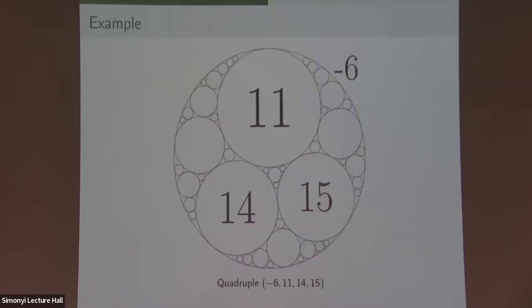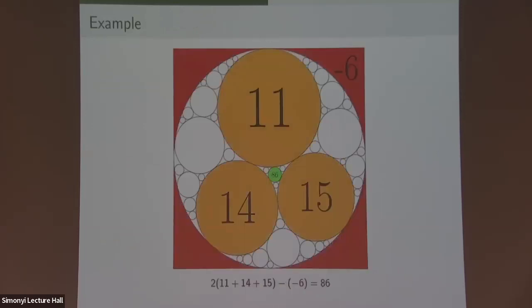For example, if I start with this quadruple: −6, 11, 14, 15. If I want to find the curvature of the circle in the middle, I add 11, 14, 15, double it, subtract −6, and get 86. That's the curvature in the middle. If you just keep doing this, you can fill in all the possible curvatures in the entire packing with this simple linear algebra.